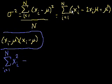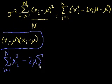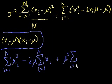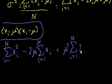The sum from i equals 1 to n of the second term is the same as minus 2 times mu times the sum from i equals 1 to n of x sub i. And then finally, the last part is just a constant term — mu squared — so you can take it out. That becomes plus mu squared times the sum from i equals 1 to n of 1. We just divided a 1 out, took it out of the sigma sign, and you're left with a 1 there.